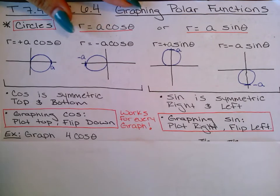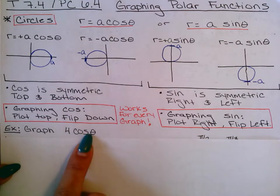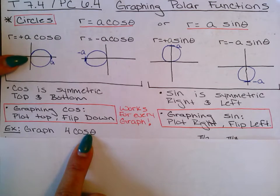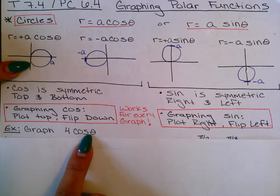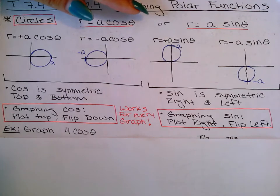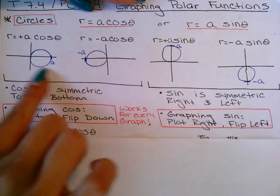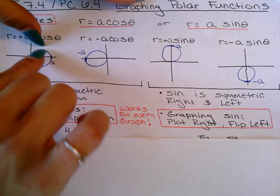Let's check out our first circle example: r = 4cos(θ). The moment I see a number times a trig function, that's the red flag that tells me it's a circle. Because it's a positive four and a cosine, I know this function is going to hang out completely on the right-hand side, it's going to be symmetric top and bottom, so all I have to do is plot the top and flip it down. That number four also tells me how far out it goes, so I already have a nice idea of what this looks like before I even start graphing.